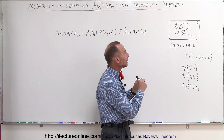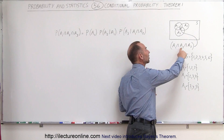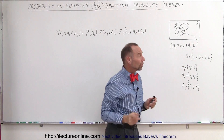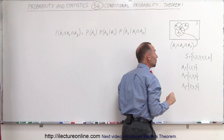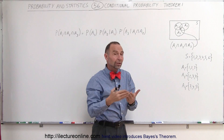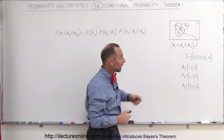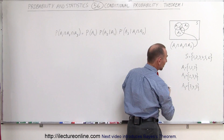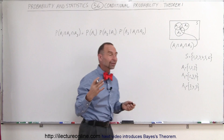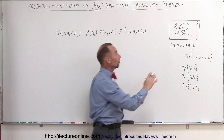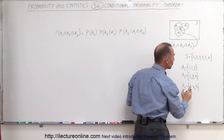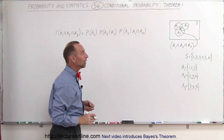What is the probability that you'll get A1 intersect A2 intersect A3? That intersection is the outcome that belongs to all three events. Notice that the number 3 occurs in all three events — it's an outcome in A1, A2, and A3 — so the intersection of all three gives you just the number 3, a single outcome.